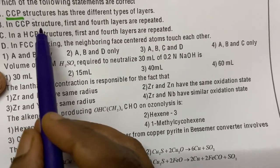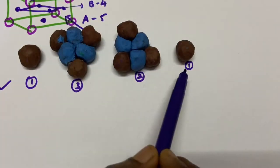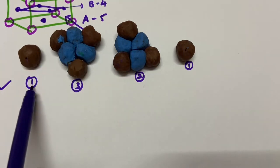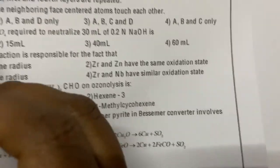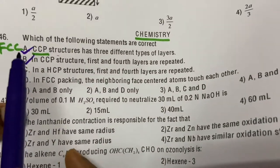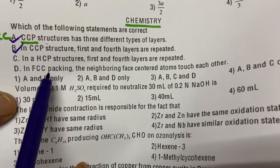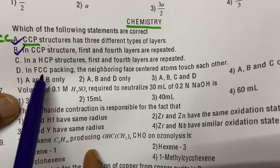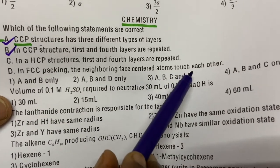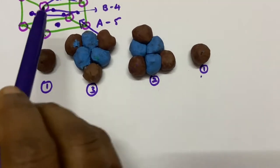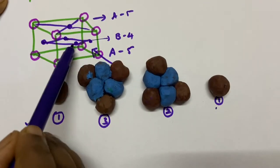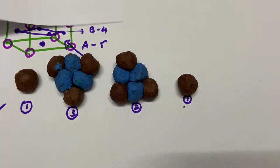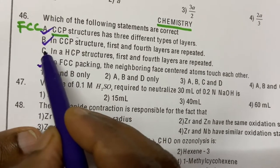So CCP has 3 different layers — that is statement A, correct. In CCP structure, the first and fourth layers are repeated. The fourth is again a repetition of the first one — 1, 2, 3, and the fourth repeats the first. So statement B is also correct. Now for FCC packing, the neighboring face-centered atoms touch each other — that is also true, so statement D is correct.